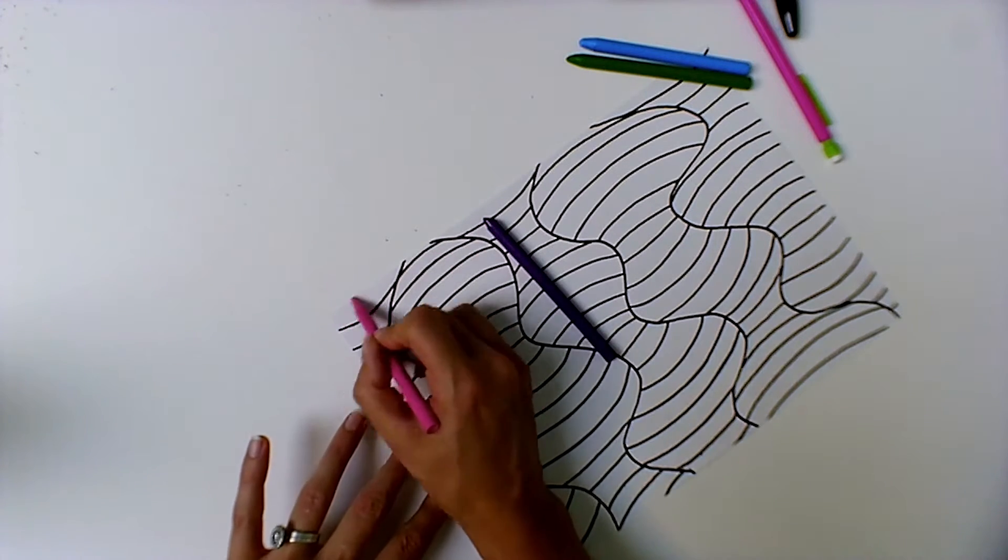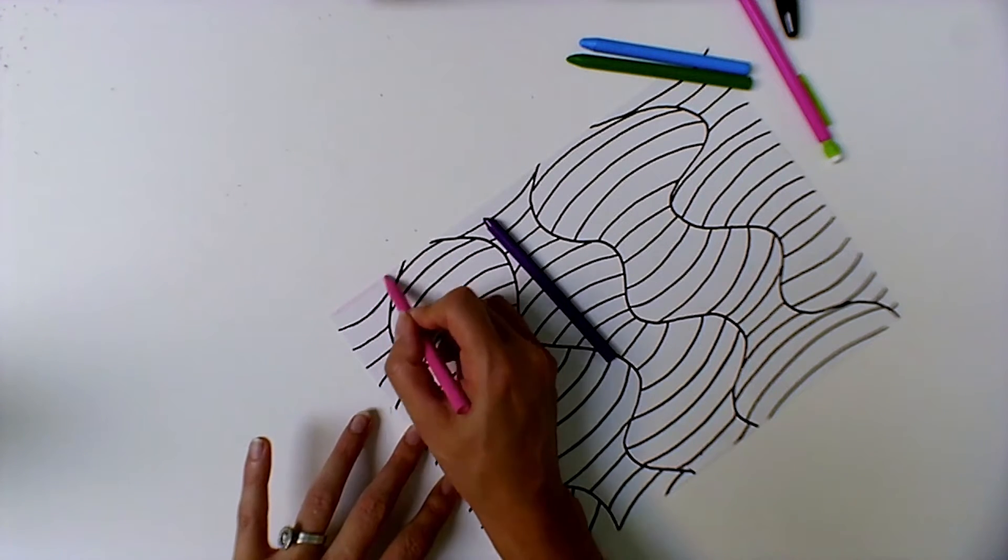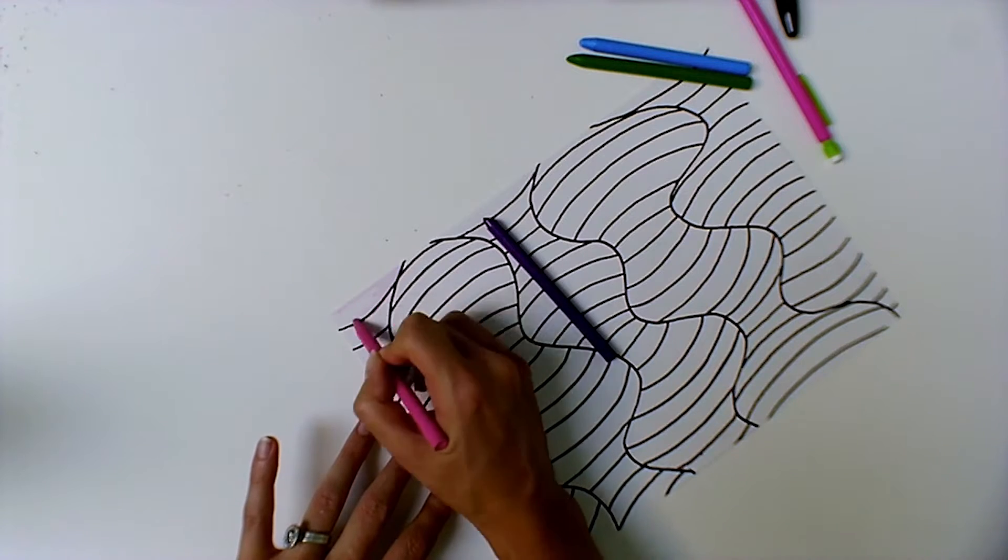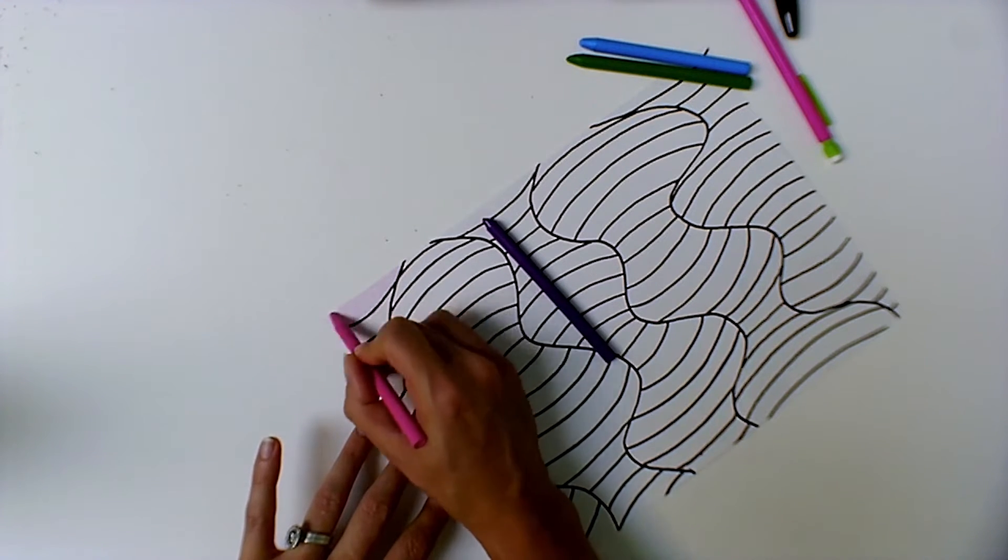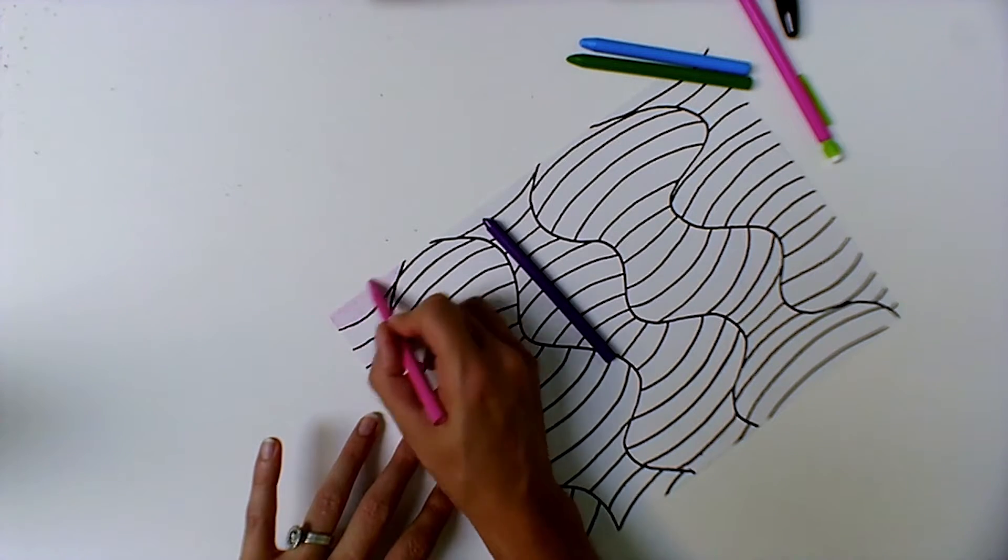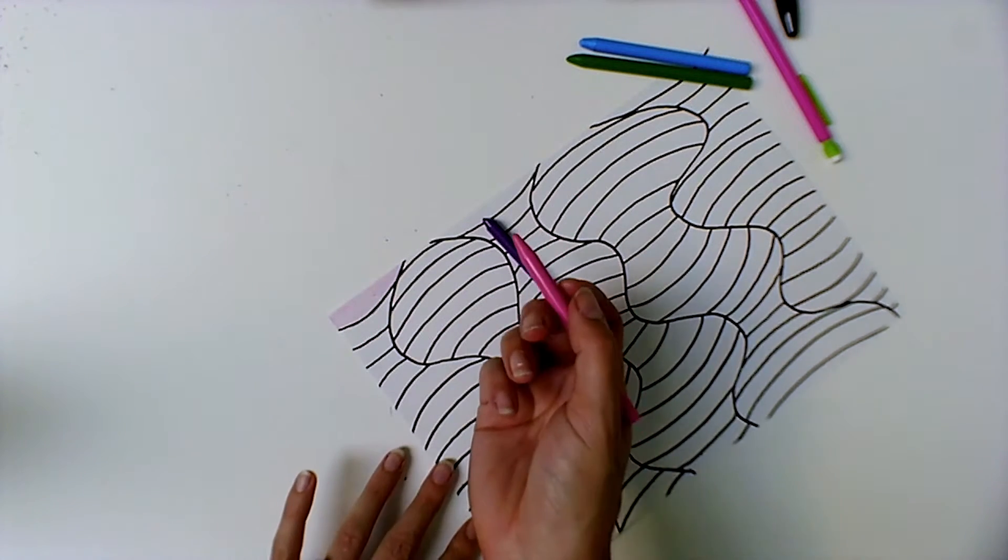So I'm going to start by coloring very lightly like we learned in our worksheet. It's very important to color lightly with colored pencils so you can build up layers which is really going to help us when we blend.